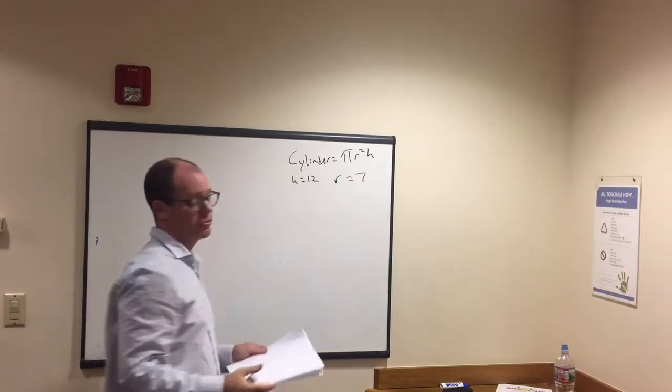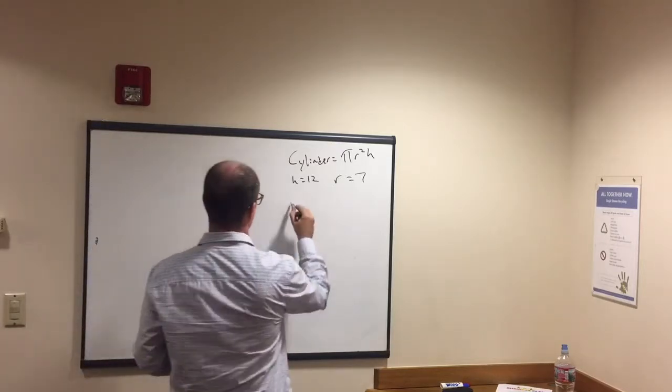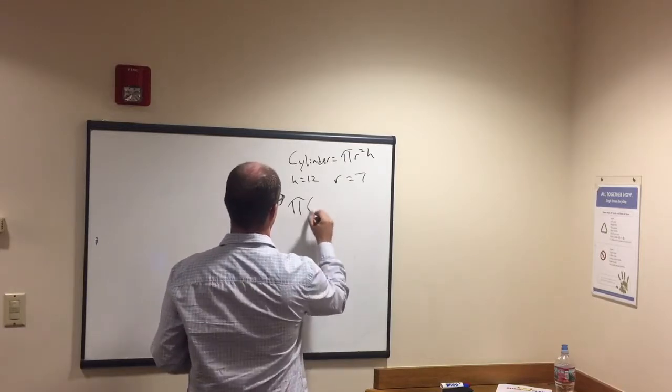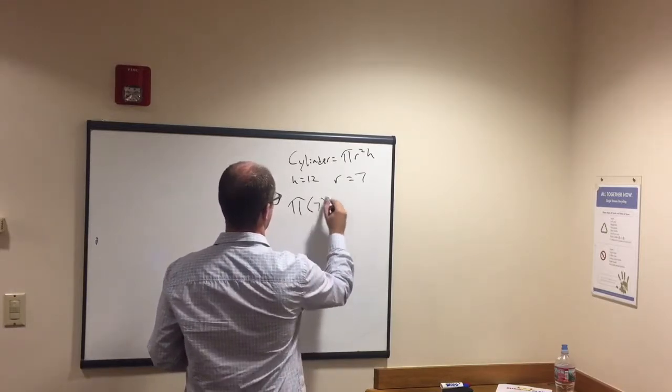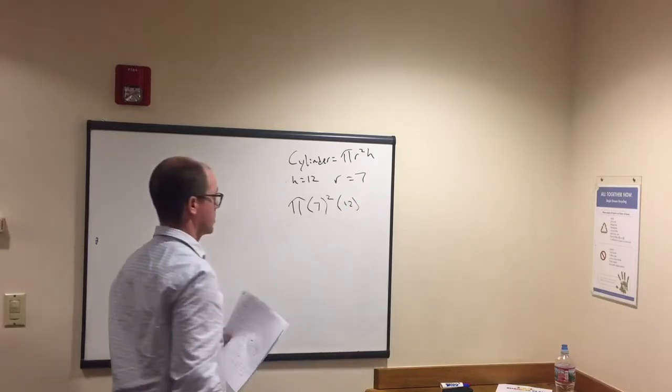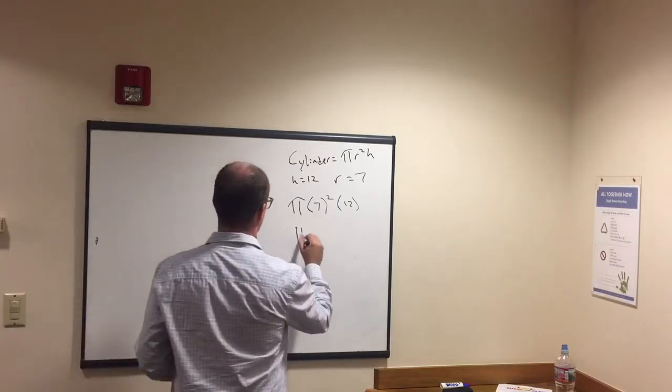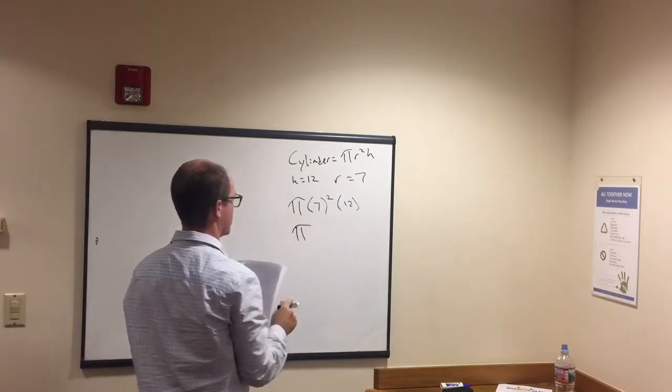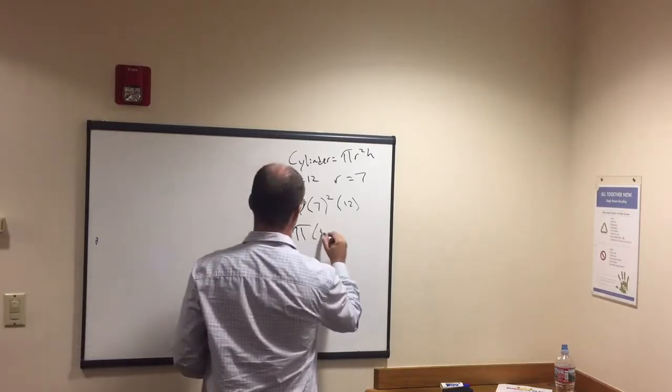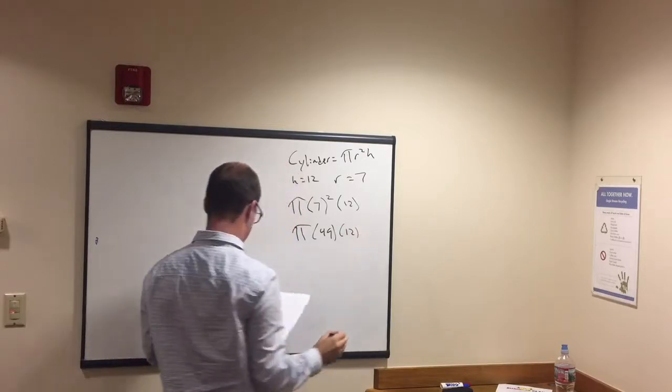Once you know the formula it's pretty straightforward, you just have to plug this stuff in, right? So if we're looking at this one, pi r squared h, pi right there, what's the radius? 7 squared times 12. Then what I have to do, again, drop pi down here. I don't ever have it be like 3.14. Keep it at pi. 7 squared is 49 times 12.